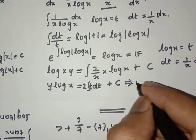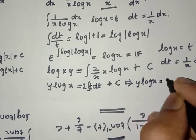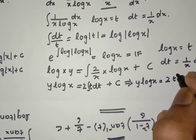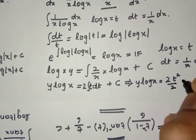This is equal to y log x is equal to 2 t square by 2 plus C, which gives us y log x equals log x squared plus C.